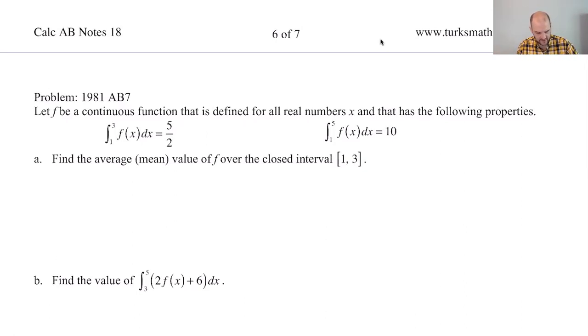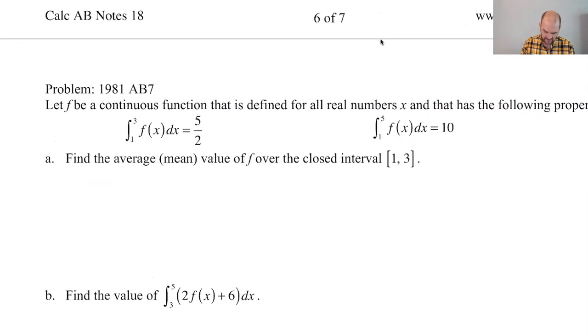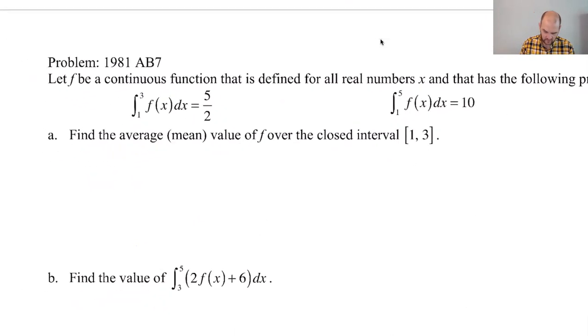81 AB 7. F is a continuous function, but not necessarily differentiable. A continuous function that is defined for all real numbers x and has the following properties: The integral from one to three is five halves, and from one to five is ten. So we could find, if you go from one to three, and then one to five, we could go from three to five also, which I'm thinking is basically this problem.